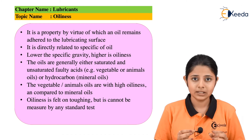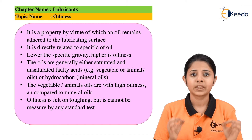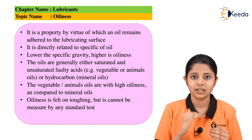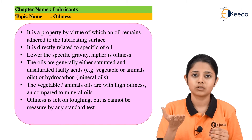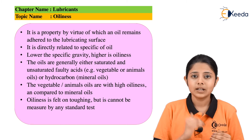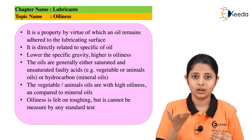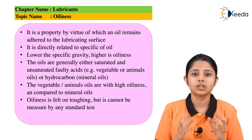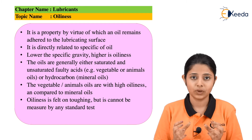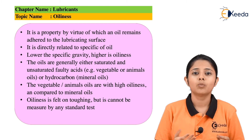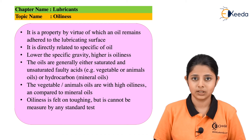Oiliness can be measured with respect to specific gravity. Lower the specific gravity, higher the oiliness of the oil. In other words, lower the density, higher the oiliness. So oiliness is measured in terms of specific gravity, and lower the specific gravity, more will be the oiliness.